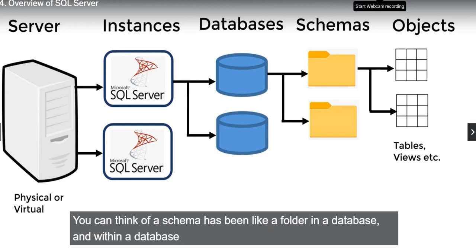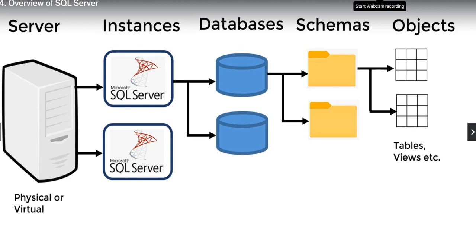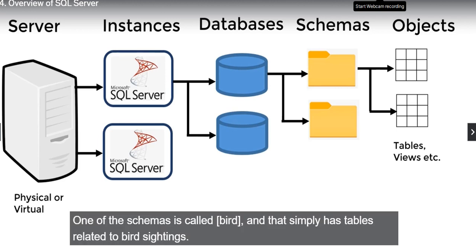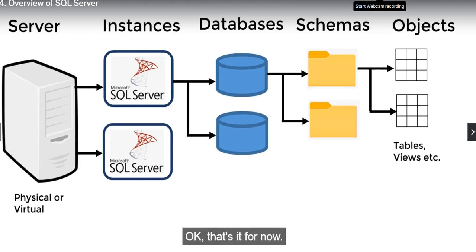You can think of a schema like a folder in a database. Within a database, each object needs to belong in a schema. For example, in our sample database one schema is called Bird, and it simply has tables related to bird sightings and bird-related information.